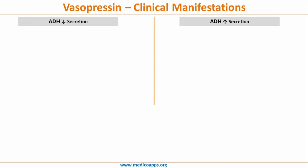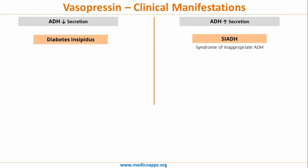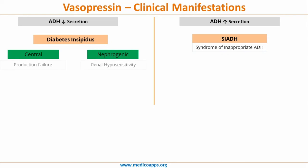After the physiology, let's look at the pathology and clinical manifestations. At one end of the spectrum there is decreased ADH secretion, and at the other end there is increased ADH secretion. Decreased secretion is called diabetes insipidus, and increased secretion is called syndrome of inappropriate anti-diuretic hormone, or SIADH. Diabetes insipidus can be of two types: central and nephrogenic. In central diabetes insipidus there is a production failure, whereas in nephrogenic there is renal hyposensitivity to the circulating ADH.